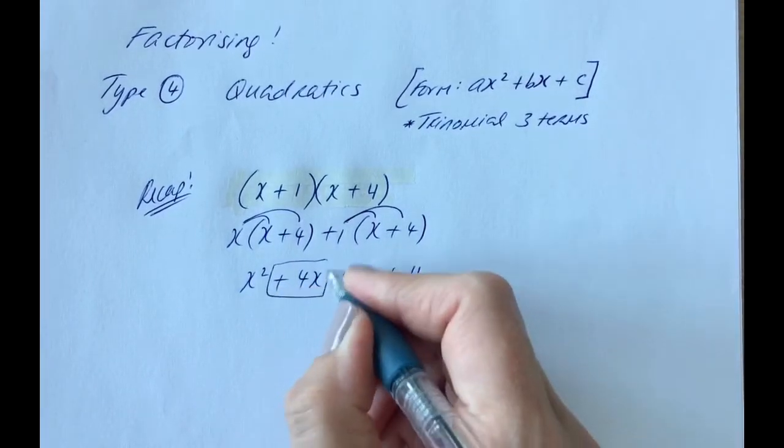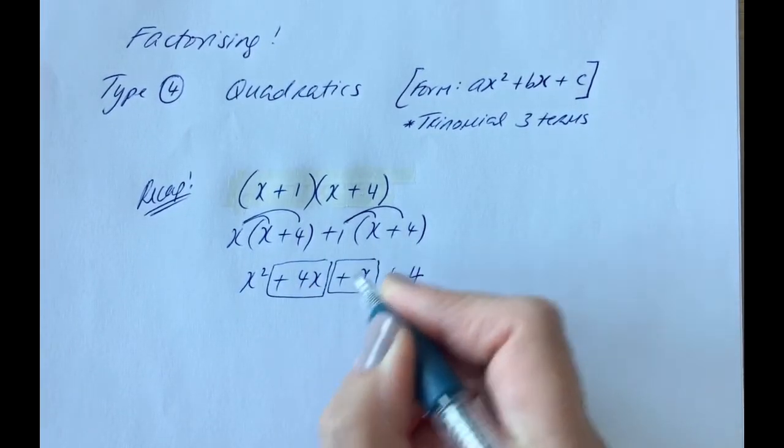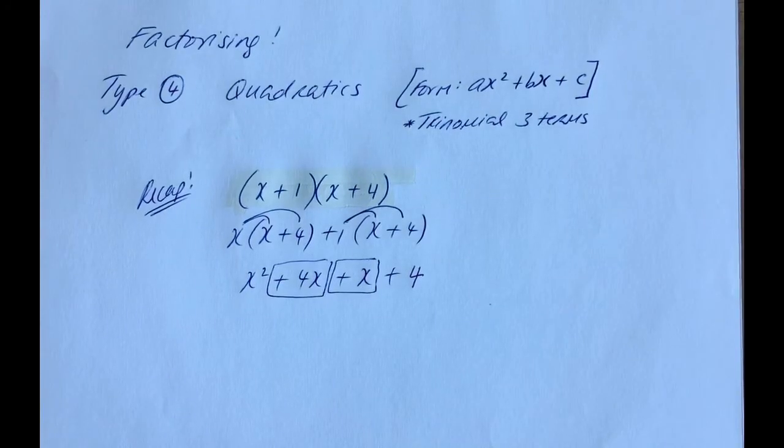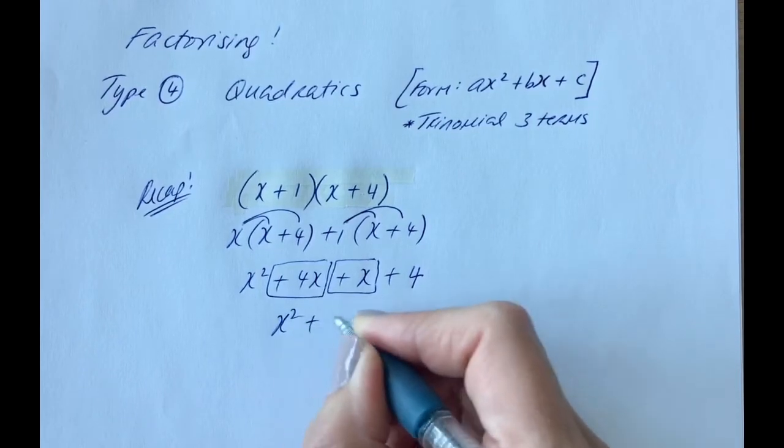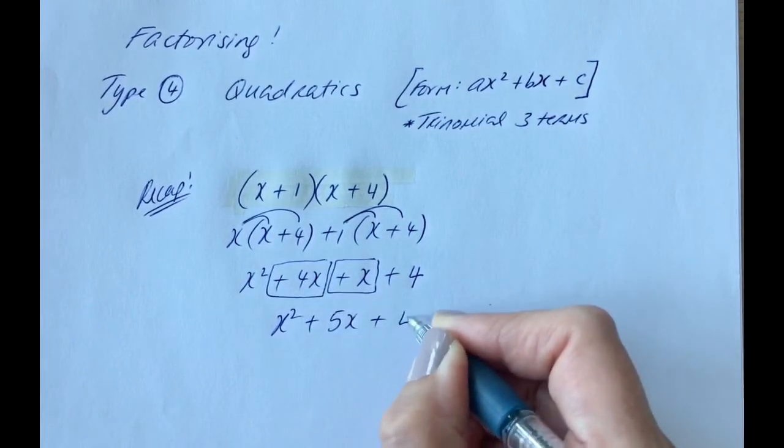And then we'd get to this bit, and we'd try and tidy up so we could add together the terms that are the same. So we have the two x terms in the middle are the only terms that are alike, so we can add them together, and we end up with x squared plus 5x plus 4.